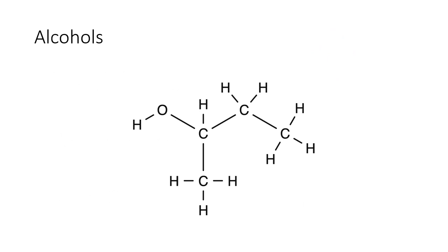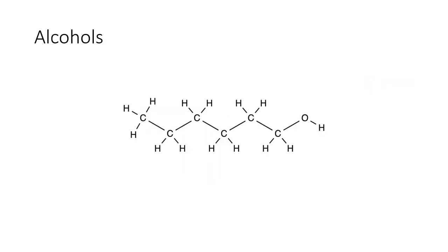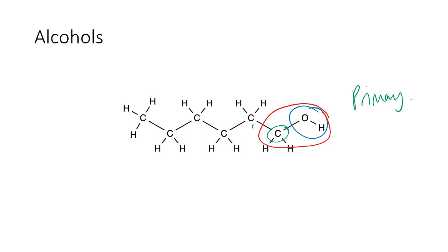Let's have a look at this example. Here's the alcohol functional group; here's the carbon it's bonded to. It's bonded to one, two other carbons — so this is a secondary alcohol. Now this next one: here's the alcohol group, here's the carbon it's bonded to — it's bonded to one other carbon, making it a primary alcohol. You'll notice the alcohol group is attached to the end of the chain — the terminal carbon.